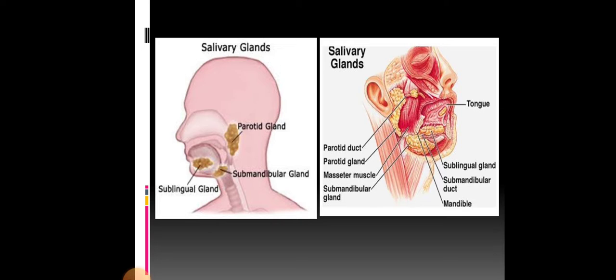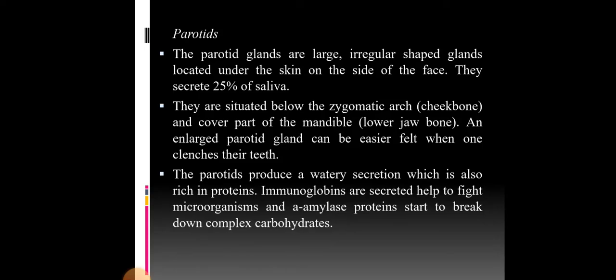The salivary glands contain the parotid glands, submandibular glands, and sublingual glands. The parotid glands are large, irregular-shaped glands located under the skin on the side of the face. They secrete 25% of saliva. They are situated below the zygomatic arch (cheekbone) and cover part of the mandible (lower jawbone). An enlarged parotid gland can be easily felt when one clenches their teeth. The parotid glands produce a watery secretion rich in proteins. Immunoglobulins help fight microorganisms, and amylase proteins start to break down complex carbohydrates.